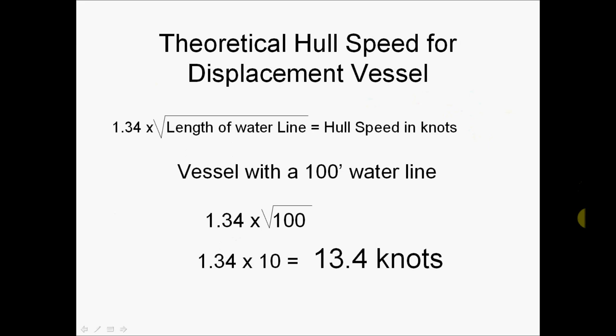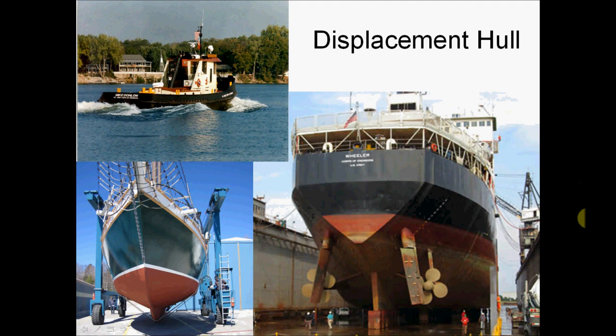As the vessel approaches this hull speed, the efficiency of the hull drops exponentially. What happens is the vessel is creating a wave moving through the water, and the faster it goes, the deeper the vessel sinks into the trough of that wave, creating more turbulence and friction. It gets to a point where it really cannot push past that threshold. If you look at the photo, the tugboat in the top left corner — where the arrow is pointing out the wave created by the hull — is probably traveling at its hull speed. If it goes any faster, it will sink down further rather than overcome its hull speed.